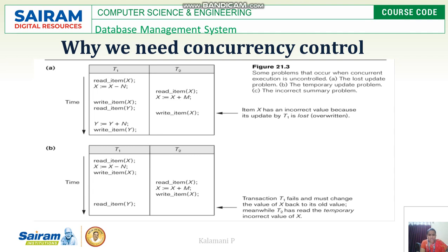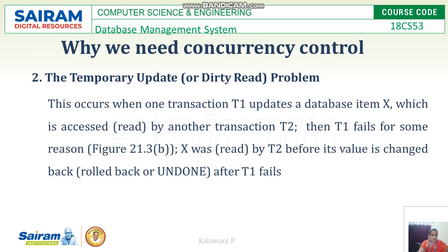If T1 fails, it must change the value of X back to the old value. Meanwhile, T2 has already read the temporarily incorrect value of X. This is the dirty read problem.